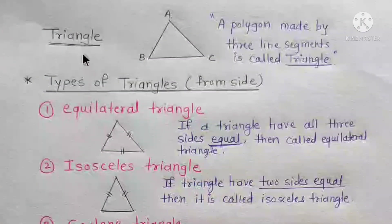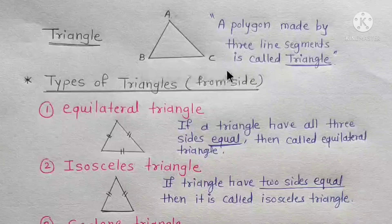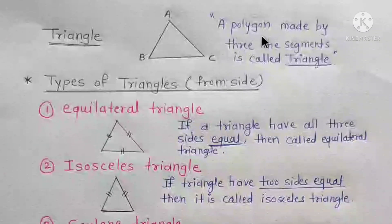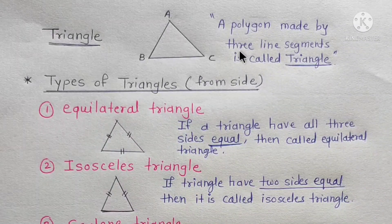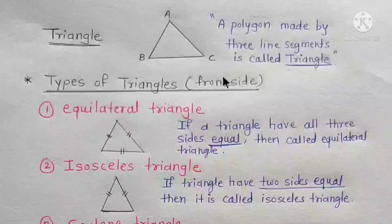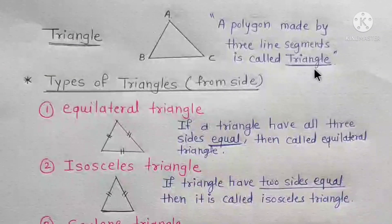This is the figure of a triangle. A polygon made by 3 line segments is called a triangle.